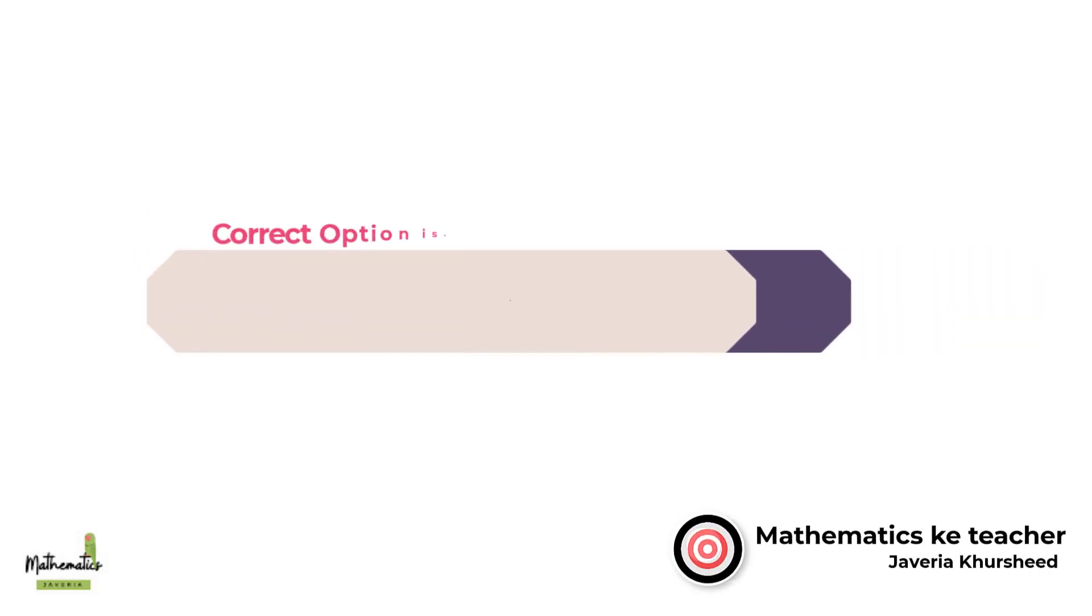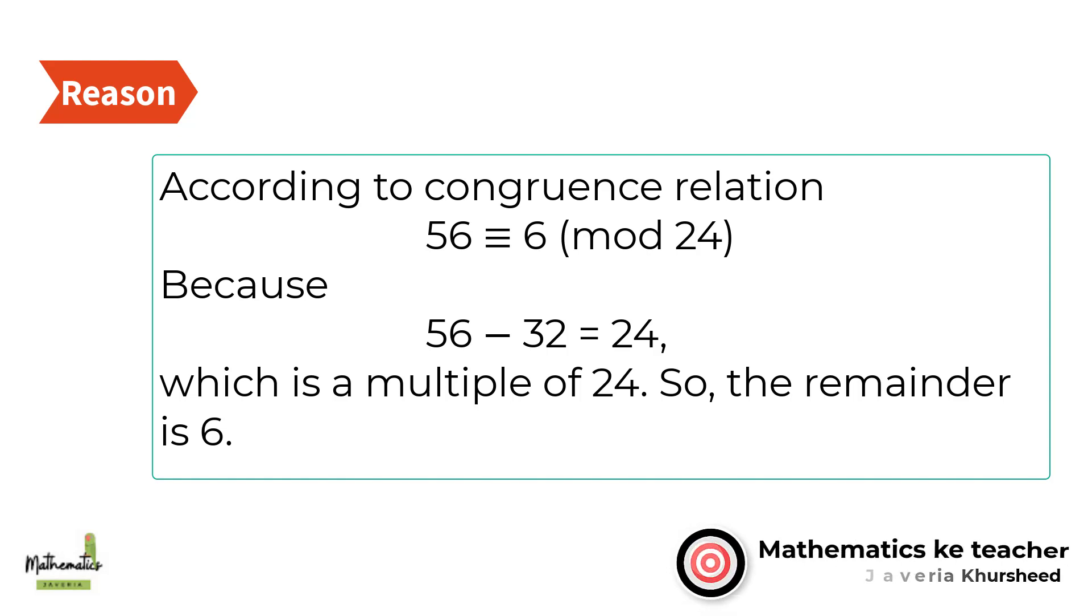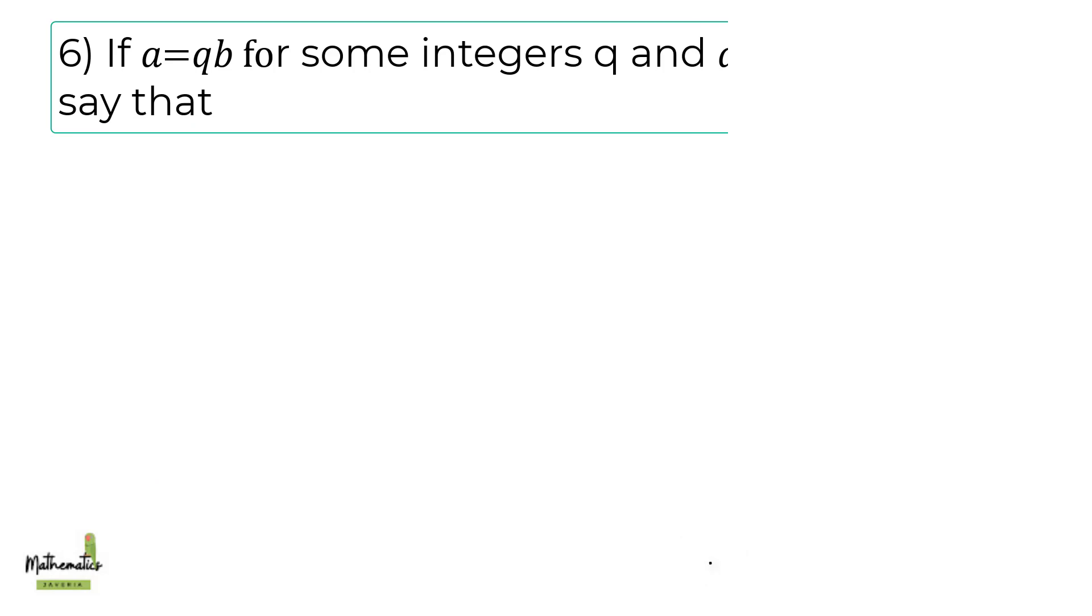Correct option is B, 6. According to congruence relation, 56 congruent to 6 mod 24, because 56 minus 32 equals 24, which is a multiple of 24. So the remainder is 6.